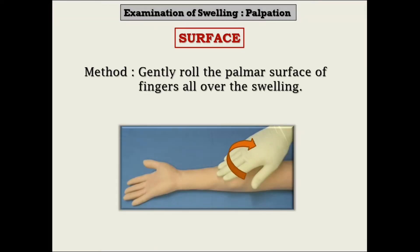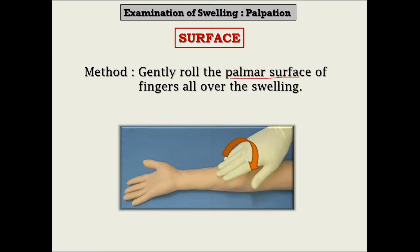The surface of any swelling can be easily assessed by gently rolling the palmar surface of your fingers all over the swelling. At this point I must remind you that it is only the temperature of any swelling which is best felt by the dorsum of your hand — otherwise everything else is best felt by the palmar surface.